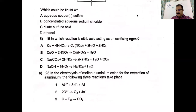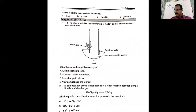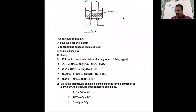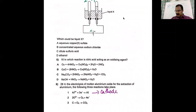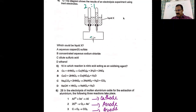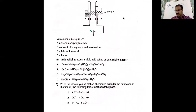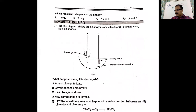In the electrolysis of molten aluminum oxide for the extraction of aluminum, three reactions are given. Which reactions take place at the anode? The cathode reaction is aluminum deposition. At the anode, oxidation occurs, and the oxygen produced at the anode reacts with the anode itself. So reactions two and three are both taking place at the anode. The answer is D — equations two and three.